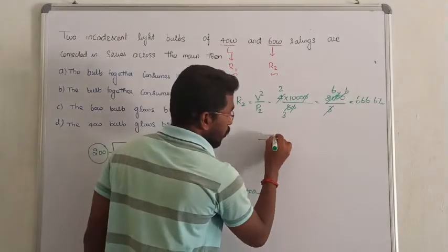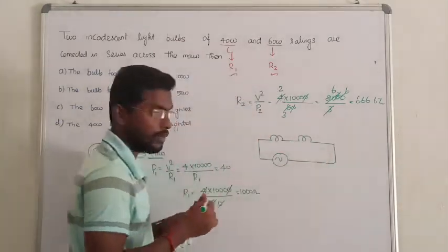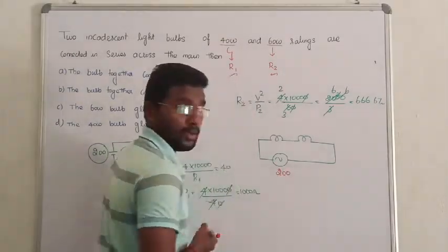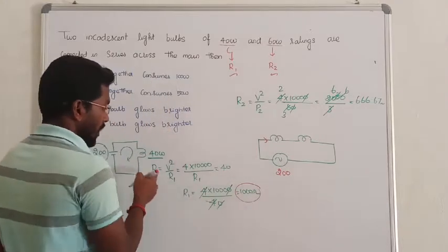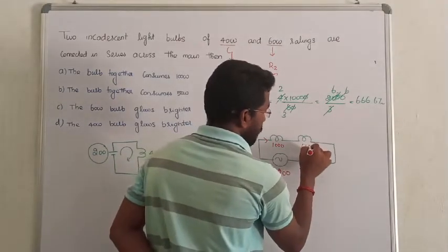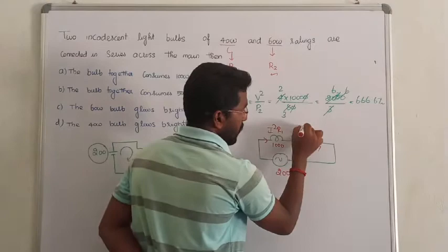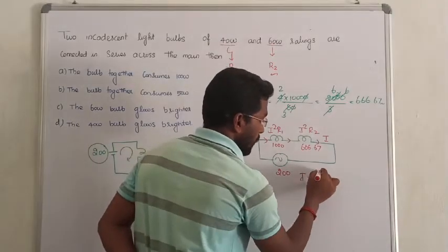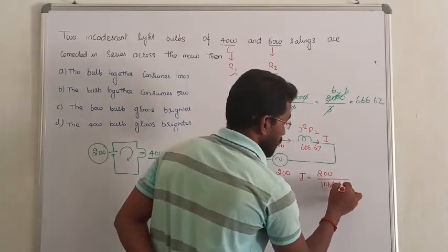Now the question is: if these two bulbs are connected together in series, which is the maximum power, and what is the total power consumed? Let me take the same supply — I am not changing the voltage. In a series circuit, current remains the same. The current I equals total supply voltage 200 divided by total resistance. Total resistance is 1,000 plus 666.67, which equals 1,666.67 ohms. So I equals 200 divided by 1,666.67, giving approximately 0.119 amperes.